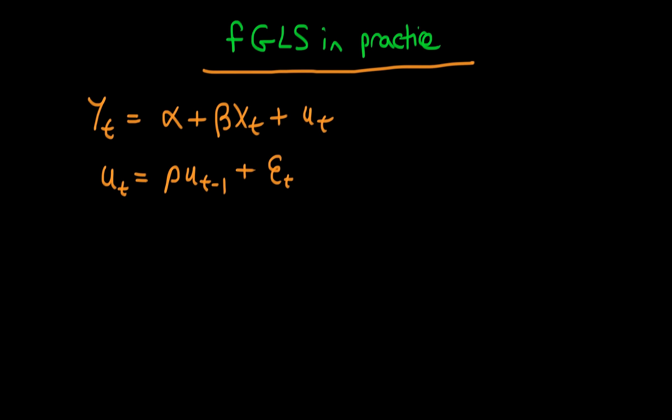So the sort of model which we specified in the last video whereby we had Yt equals alpha plus beta Xt plus Ut as a sort of primary model, and then we had an AR1 process for our errors. The idea in practice is that we don't know this particular parameter rho, so we have to estimate that.